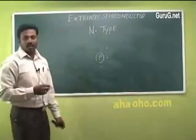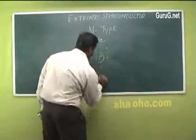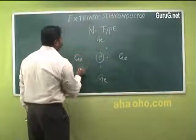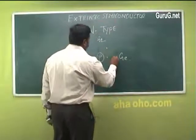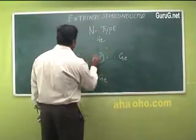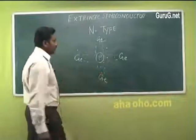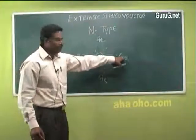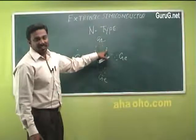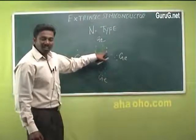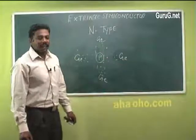The valency electron of germanium is 4. All 4 valency electrons of germanium are shared with 4 electrons of phosphorus, forming covalent bonds. This leaves one electron in excess. Since there are excess electrons, these semiconductors are called n-type semiconductors.